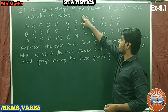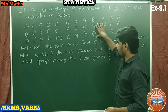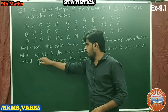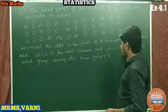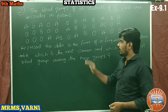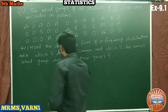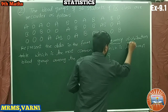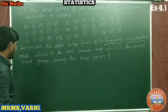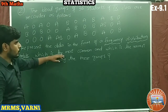The blood groups of 36 students of 9th class are recorded. We have to represent the data in the form of a frequency distribution table, and find which is the most common and which is the rarest blood group among these groups.